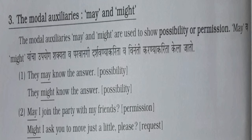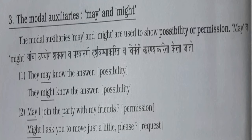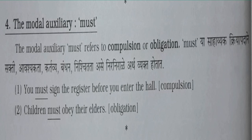The next Modal Auxiliaries are May and Might. May and Might are used to show possibility or permission, or to make a request. Example: 'They may know the answer' — 'may' indicates possibility. 'They might know the answer' — 'might' indicates possibility. Example: 'May I join the party with my friends?' — here 'may' indicates permission. Another one: 'Might I ask you to move just a little please?' — here 'might' indicates request.